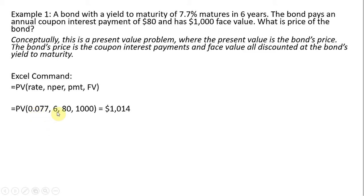Six represents the years to maturity, so this bond will mature in six years where the face value is paid back. Eighty is the coupon interest payment that occurs annually. $1,000 is the face value. Plugging this into Excel, we'll see that this bond would sell for $1,014.